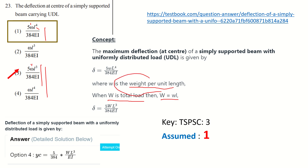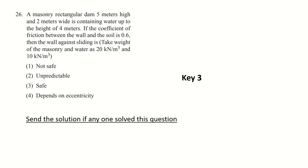Here small w is given, which is only weight per unit length, not total load. So W equals w into L. We will get the correct answer, which I am assuming is option 1. You may challenge the TSPSC key on this. If anyone knows the confirmed solution, please send it to the WhatsApp group.